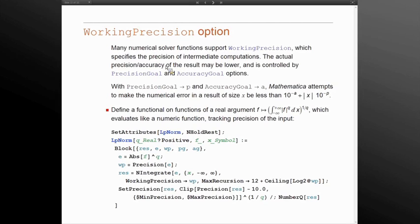The working precision option essentially lets you specify the precision of intermediate computations, but it doesn't really mean that the answer will be given to that precision. The actual precision of the output is controlled by two options, precision goal and accuracy goal, and with them specified, Mathematica attempts to get the numerical error of the result to be less than that.